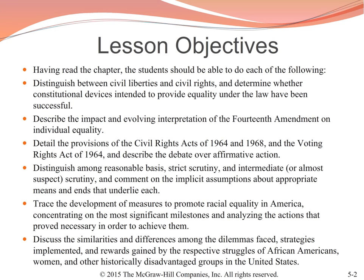After you've read the chapter, you should be able to do each of the following things. First, distinguish between civil liberties and civil rights, and determine whether constitutional devices that were intended to provide equality under the law have been successful. Next, describe the impact and evolving interpretation of the 14th Amendment on individual liberty. Third, detail the provisions of the Civil Rights Act of 1964 and 1968, and the Voting Rights Act of 1964 and 1965, and describe the debate over affirmative action.